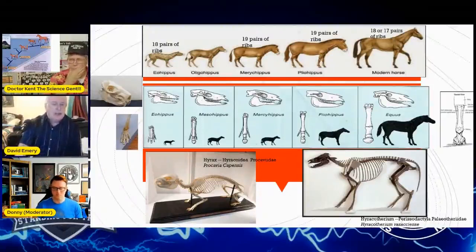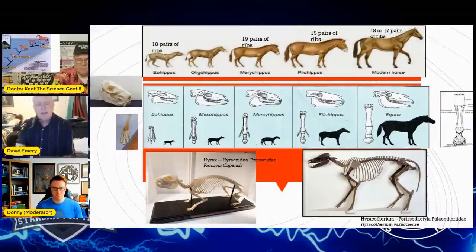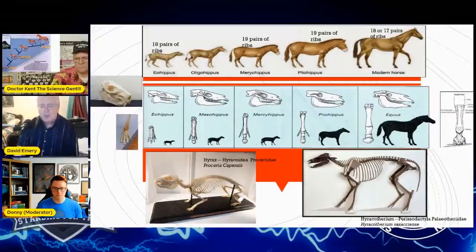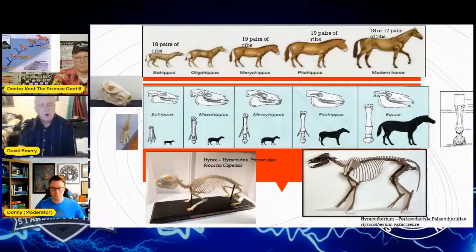The leg is progressing. You can see that the side toes are regressing. There at the end, I showed the back side of a horse, and he has what they call stem bones that are the remains of those two and four toes.